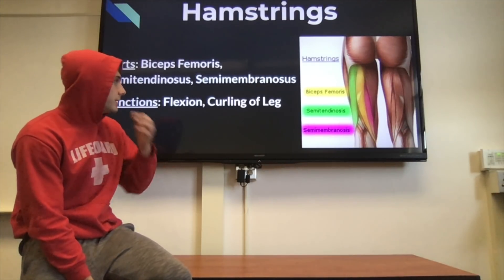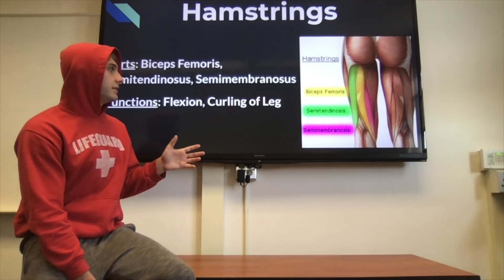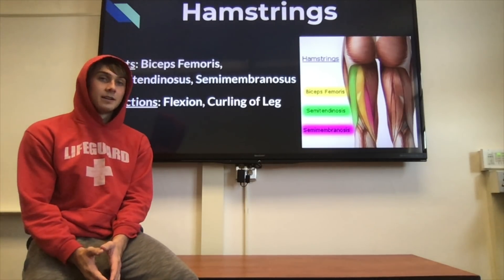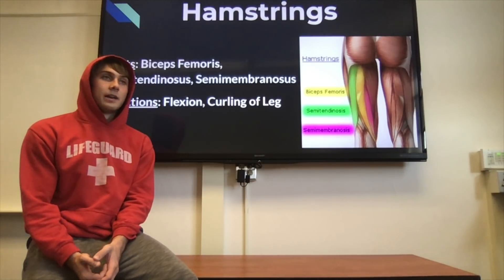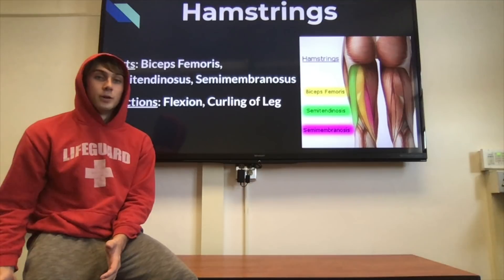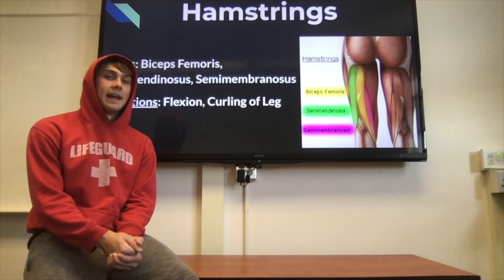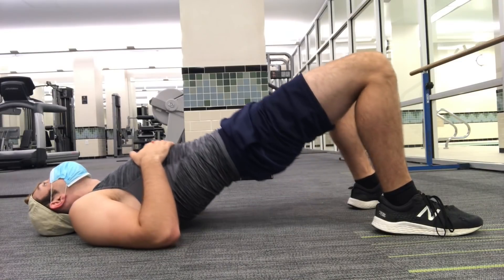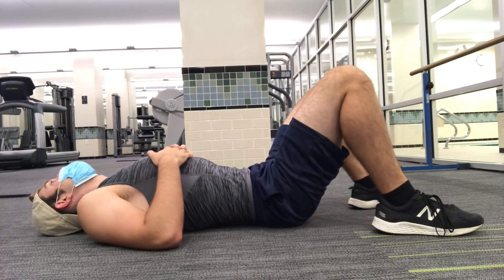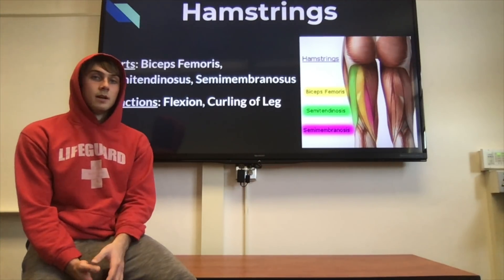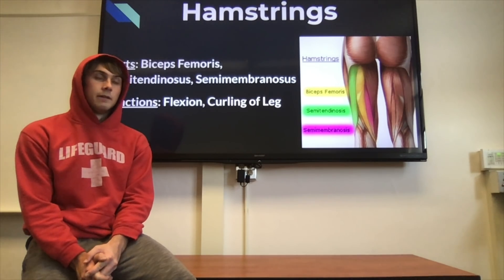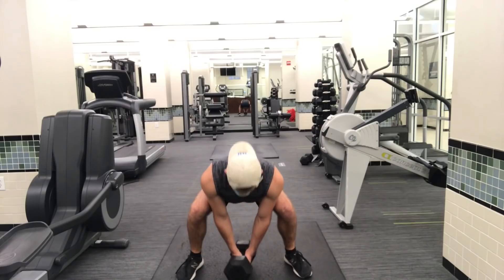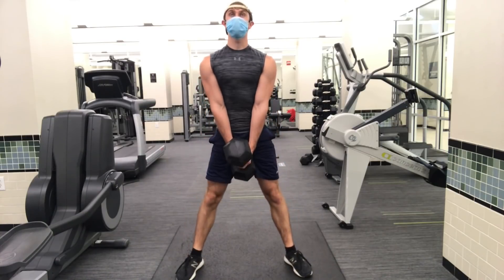The hamstrings have three major portions: the biceps femoris, semitendinosus, and semimembranosus. Think of the hamstrings as the biceps of your leg — they're involved with flexion and curling of the leg, like when your foot moves toward your butt. Lying leg curls and hip thrusts are two exercises that almost entirely isolate the hamstrings. Most big compound leg exercises like squats, lunges, and deadlifts also involve the hamstrings — sumo deadlifts in particular are great for hamstrings.